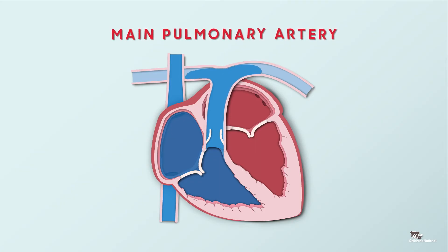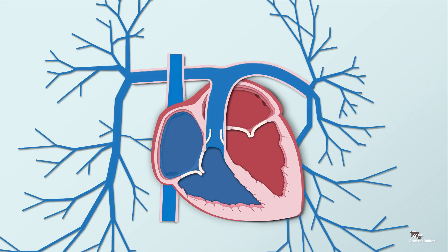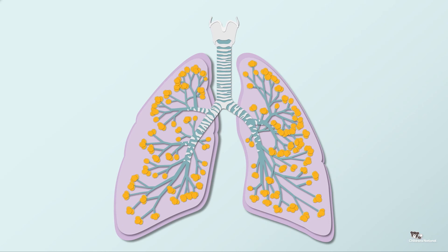Then, it continues its path through the branches of the left and right pulmonary arteries into the lungs' alveoli, which are tiny air sacs that have oxygen.